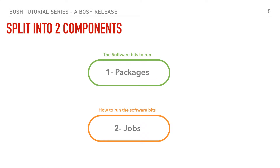A BOSH release is split into two components. The first component are the packages — we can think of packages as the software bits to run. This term is a bit loose; think of it as just the software bits that you want to run. The other component of a BOSH release are the jobs, and you can think of a job as the potential service that is going to be run by BOSH — mapping one service to one job. We're going to cover those two in more detail shortly.